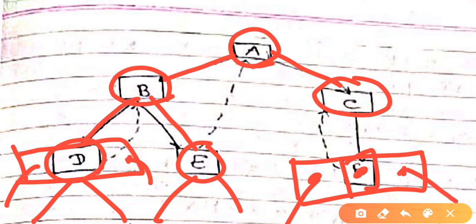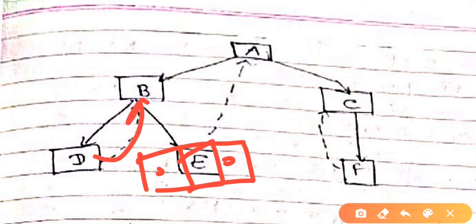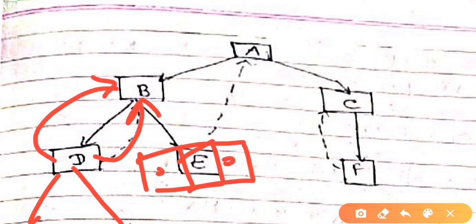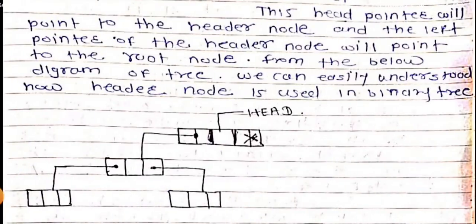When there are empty or null links in a tree, those empty spaces are used to point to higher nodes in the tree. This means those null links are used to point to higher nodes, or parent nodes. These special pointers used in place of null links are called threads.